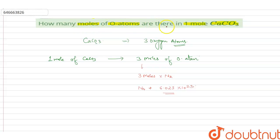moles of oxygen atoms in one mole of CaCO₃, so these are three moles of oxygen atoms in one mole of CaCO₃. So this is our answer.